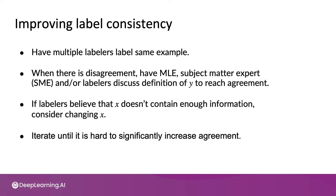So after improving x, or after improving the labeling instructions, you would ask the team to label more data. And if you think there are still disagreements, then repeat the whole process of having multiple labelers label the same example, measure disagreement, and so on. Let's look at some examples.